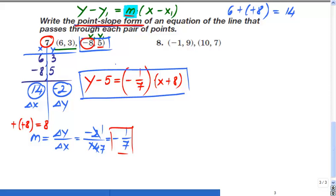That's your point-slope form for the line that passes through these two given points, (6, 3) and (-8, 5). That's all. Okay, moving on to the next one. Same approach, same approach. Write your coordinates one on top of the other: (-1, 9), (10, 7).